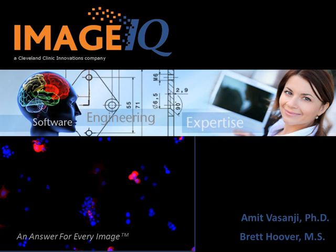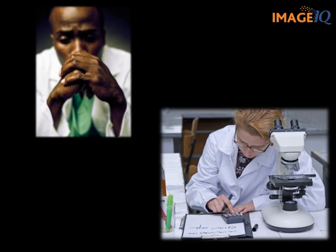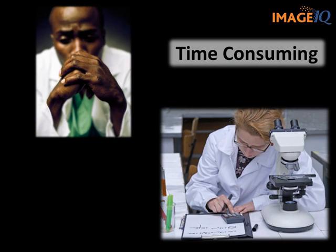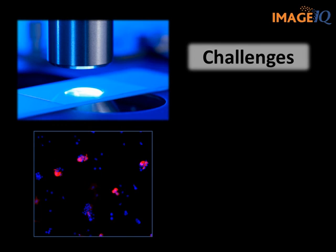Hi, I'm Brett Hoover and with me today is Dr. Amit Basanji, Chief Technology Officer at ImageIQ. Today we will be discussing a solution that ImageIQ developed for a pharmaceutical company that was developing a new gene therapy. The client was trying to measure transfection efficiency of a target gene in 2D cell culture. They were frustrated by the lack of speed, the imprecision, and the variability of their manual scoring and flow cytometry techniques. So the team at ImageIQ developed a custom software solution for them. In this case study, we will discuss some of the challenges faced by the engineers and what the result was.